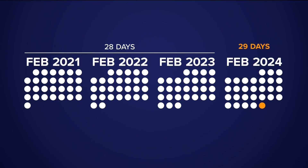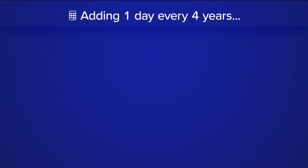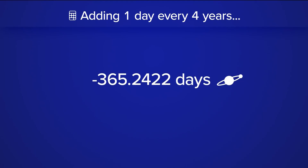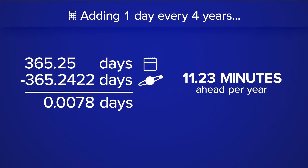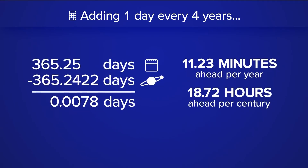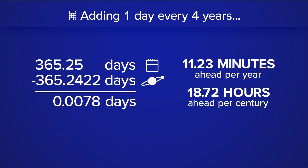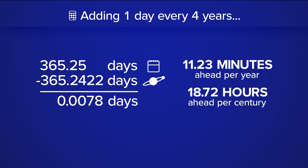We add one day every four years. But when you subtract the amount of time it takes for the Earth to complete one revolution around the sun with our solution, you find out we're still about 11 minutes off each year. In over 100 years, our calendar would be about 18 hours off, which doesn't sound like a huge problem — but over centuries, this would eventually throw off our calendar.